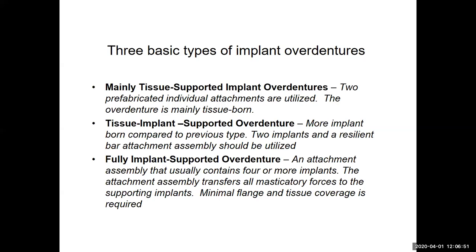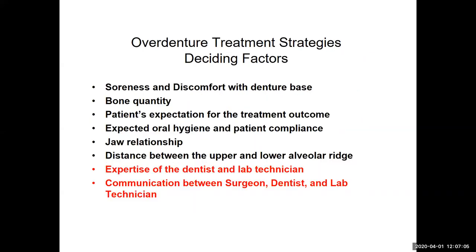The fully supported implant overdenture uses an attachment assembly with four or more implants, transferring all forces to the supporting implants — minimal flange and tissue coverage required. Deciding factors include soreness and discomfort with the denture base, adequate bone quantity, patient expectations for treatment outcome, oral hygiene and patient compliance, jaw relationship, intra-occlusal space, and the distance between upper and lower alveolar ridges. The expertise of the dentist, lab technician, surgeon, periodontist, and implant company — and communication between all of them — is critical.